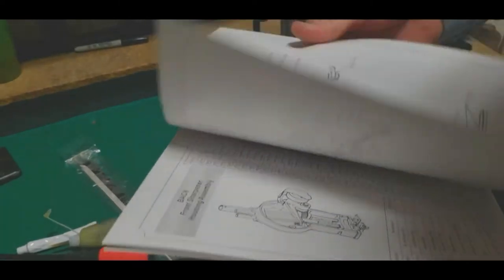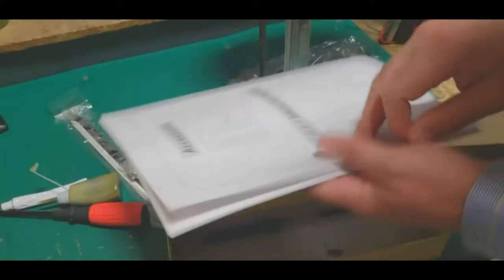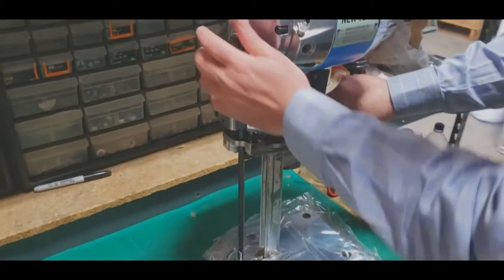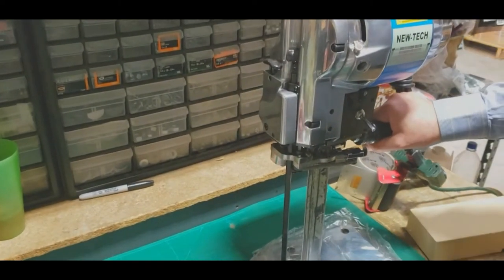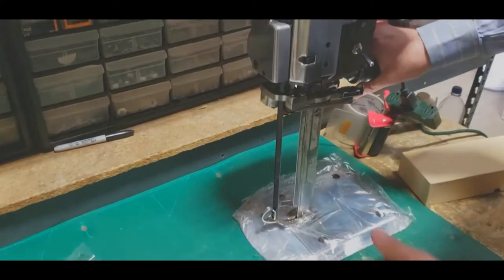You will also get the parts book and owner's manual which tells you how to care for the machine in the beginning, different stuff. You have a wrench here to change the blade. How do you change the blade?